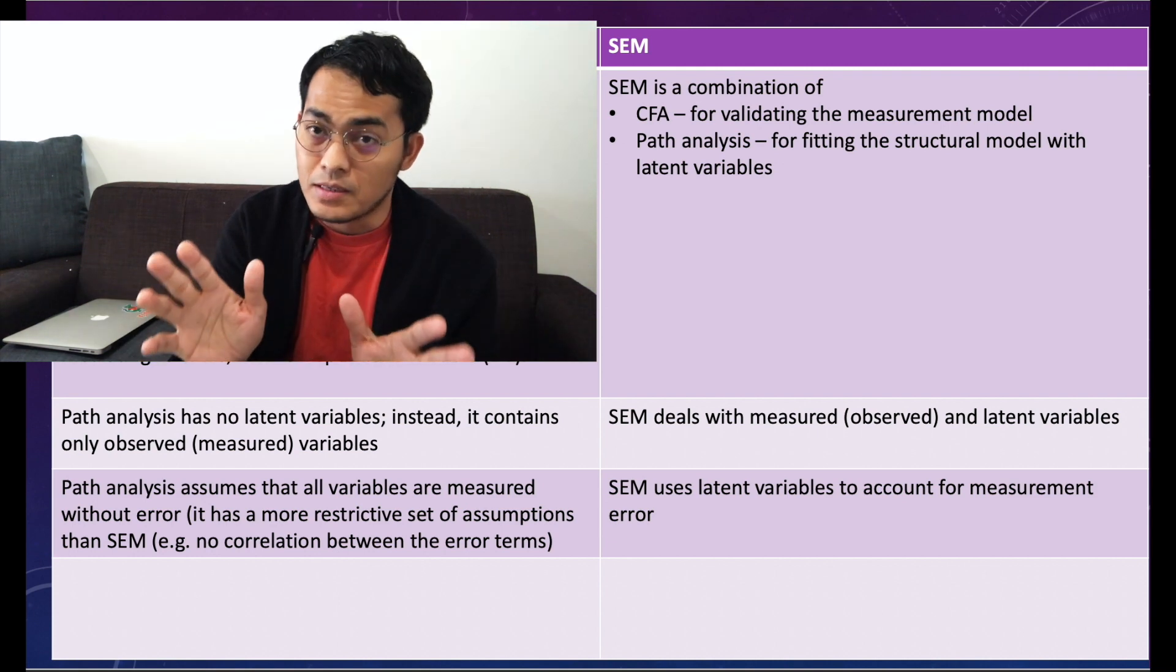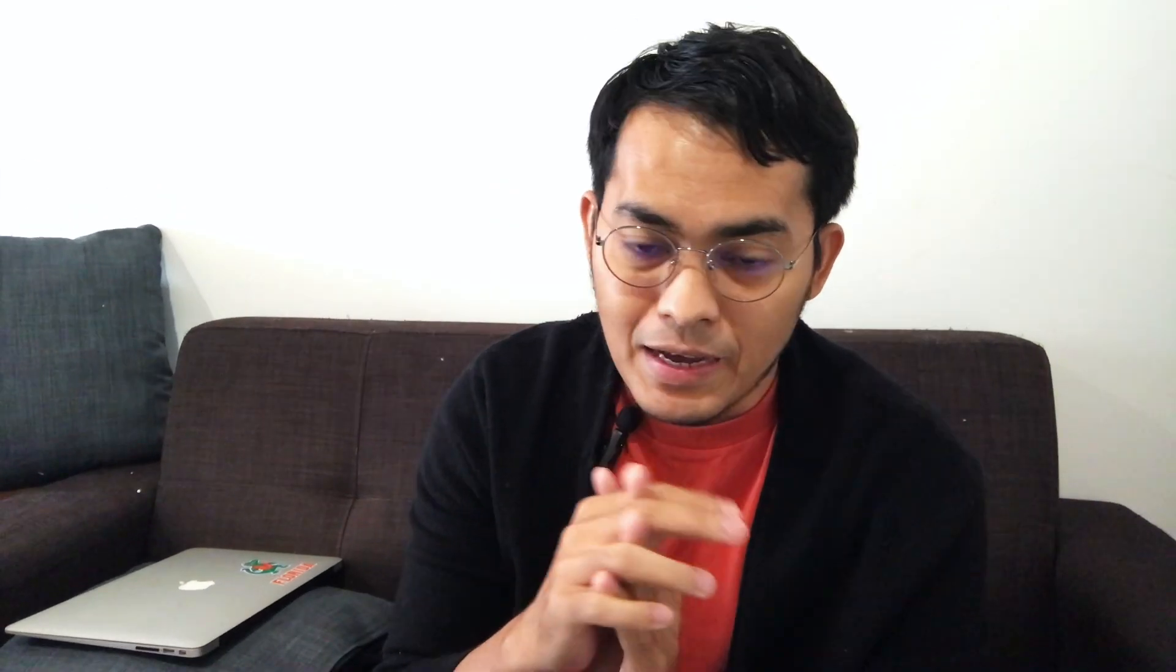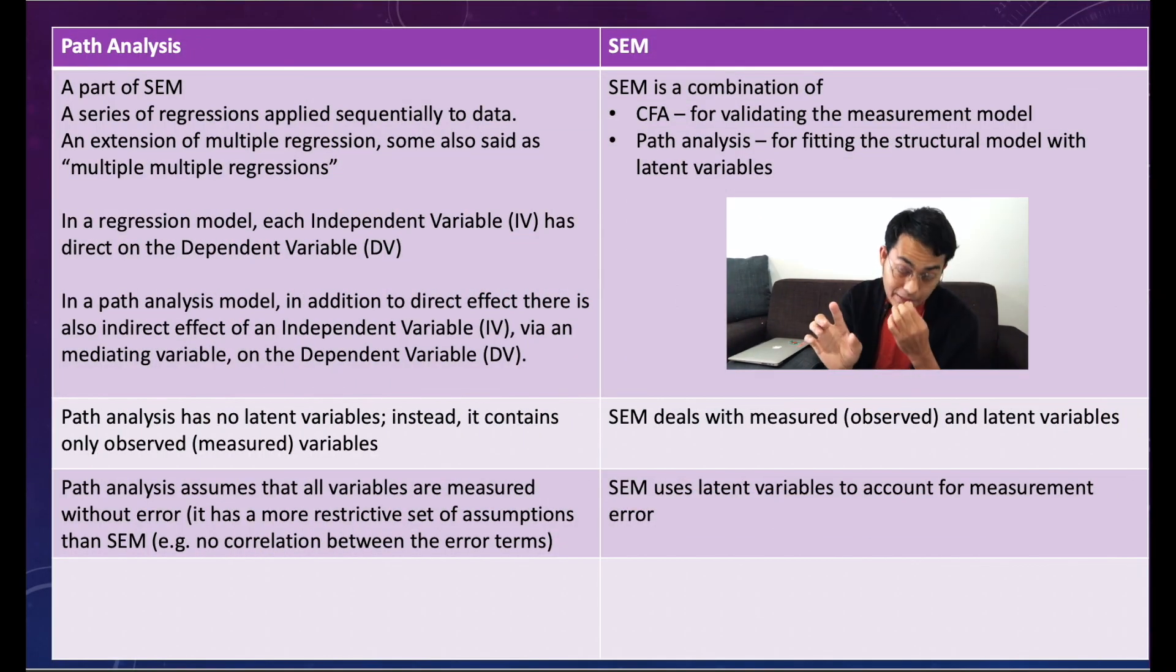Another one: path analysis has no latent variables. Please underline that - path analysis has no latent variables. Instead, it contains only observed variables. Path analysis assumes that all variables are measured without errors, so it means the instrument to measure the variables is valid already, so you don't need to test the constructs. It has been validated with good construct validity, so you don't need to do the construct validity again.